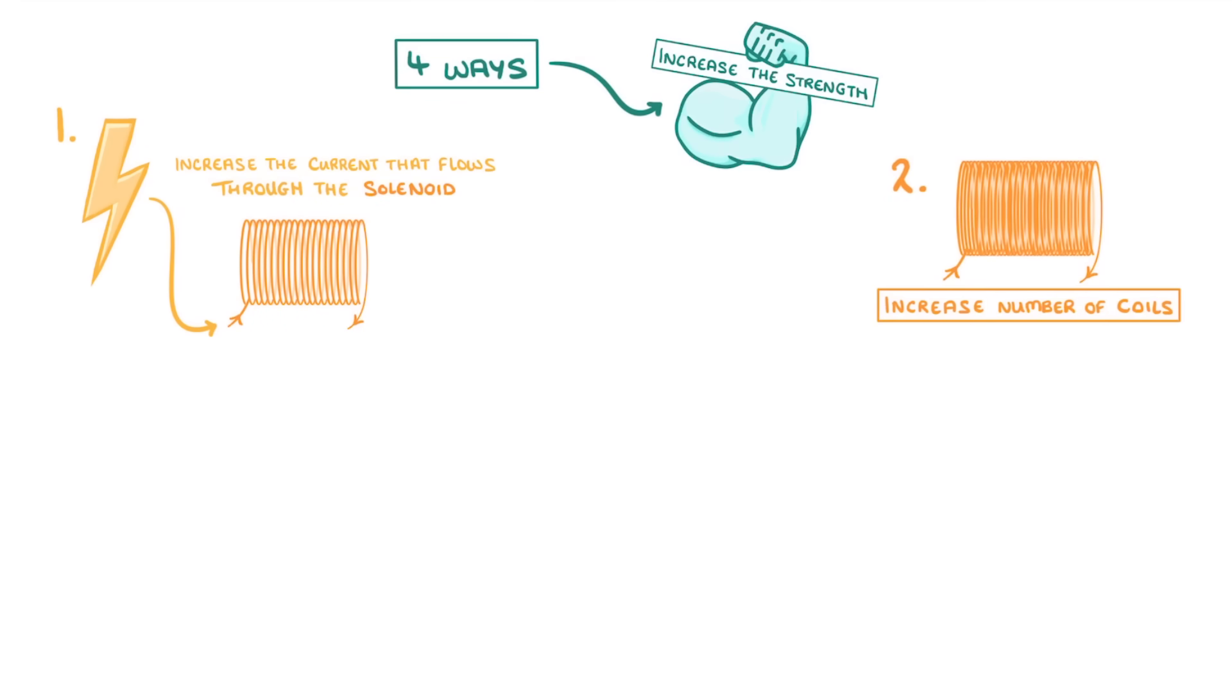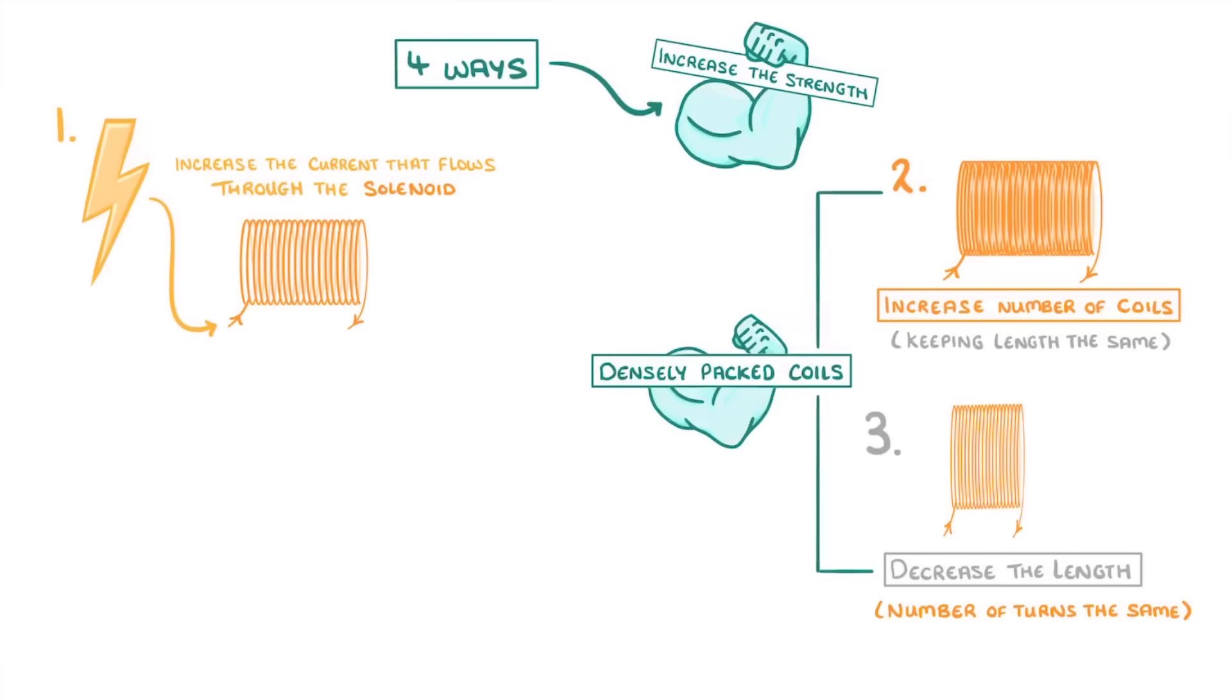Second, we can increase the number of turns in our coil while keeping the length of the solenoid the same. And similarly, we could decrease the length of the coil while keeping the number of turns the same. Basically, solenoids that have very densely packed coils will be the strongest.